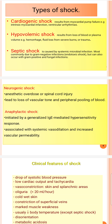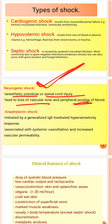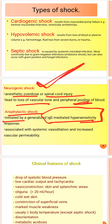In addition to the three main types, there are other types of shock. Neurogenic shock can occur due to anesthesia overdose or spinal cord injury, causing peripheral blood pooling. Anaphylactic shock is initiated by generalized IgE-mediated hypersensitivity, characterized by systemic vasodilation and increased vascular permeability.